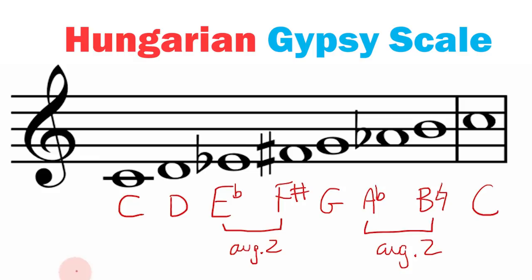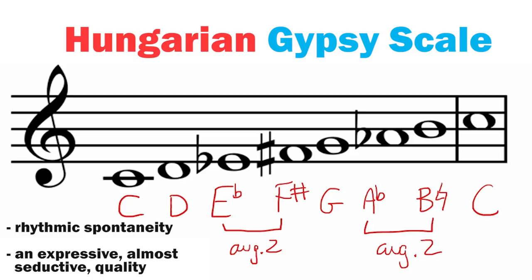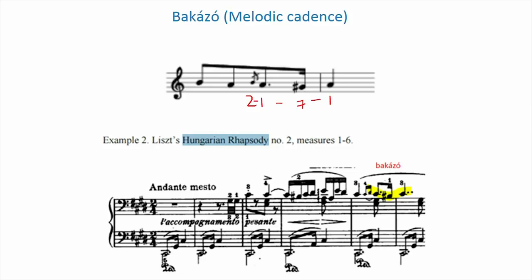Aside from the Hungarian gypsy scale, Liszt also blended in other elements of gypsy music like its rhythmic spontaneity and an expressive, almost seductive quality. Another aspect of gypsy music were phrases rounded off with a type of melodic cadence — basically a musical sentence ender, like a period — known as a bakazo. The melodic phrase ending starts with the second scale degree, goes to the tonic, goes to the leading tone, and then back to the tonic. It's just a way to close a phrase.